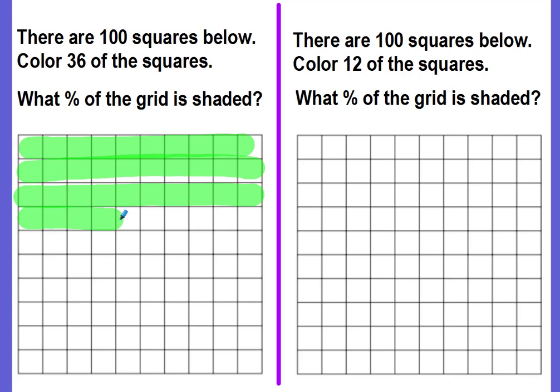And then I need to shade six more. So now I have shaded 36 squares. And I want to know what percent I've shaded. Well, I just shaded 36 out of 100. And percent means per 100, which that's what this is, 36 per 100. So my percent would be 36%.